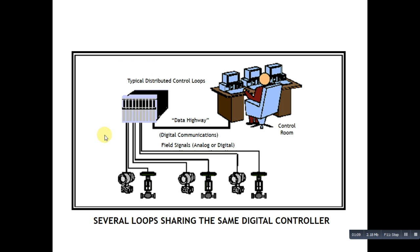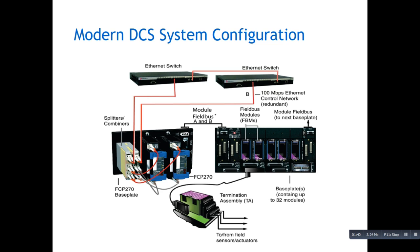Here we see various control loops - this one, this one, and this - which are connected to a digital controller. The process is being controlled through this digital controller, and from it, through data communication, we are able to see our process and control it through these operator workstations. So nowadays, the modern DCS looks like this.